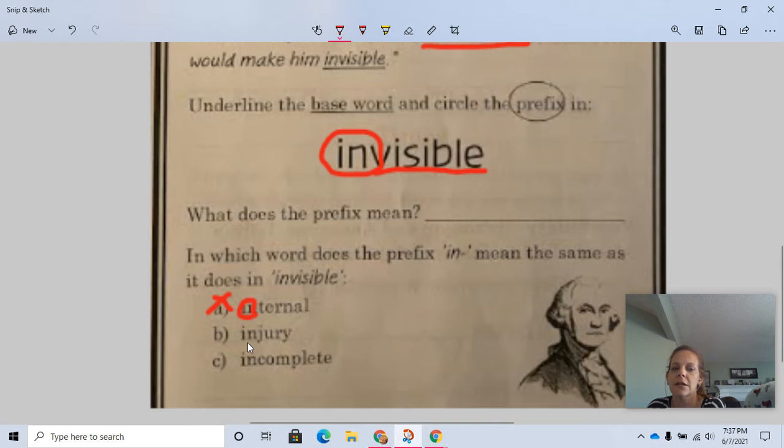Let's look here. Injury. If we circle 'in', we're left with jury. Well, jury is a word. A jury is people who sit in court and listen to the case and they make the decision about whether someone is guilty or innocent. Now, if we add 'in' to that to make injury,